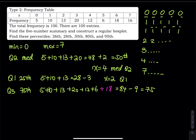After adding the eighteen, you are at x equals six. Look at frequency eighteen on the table — x equals six. If you take nine steps back, 84 minus 9 is 75, and you're still within the group of eighteen, so you're still at x equals six. Therefore x equals six is Q3.